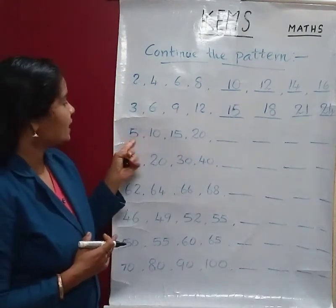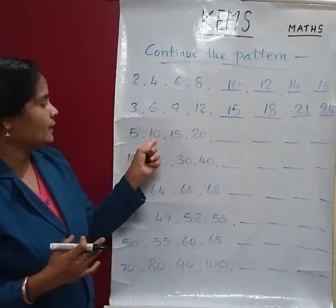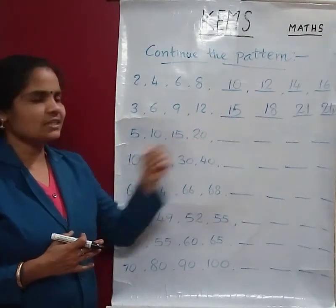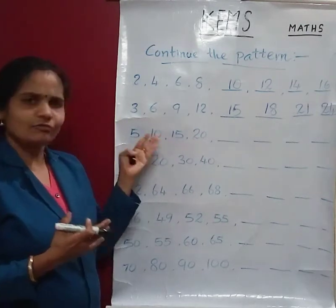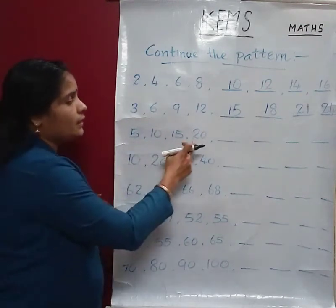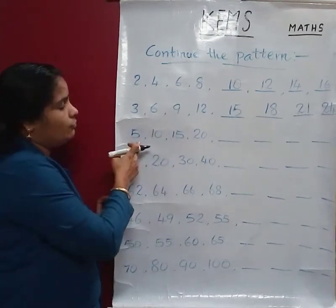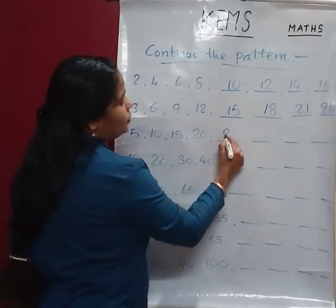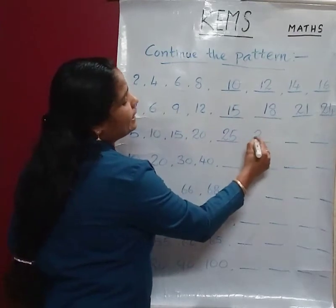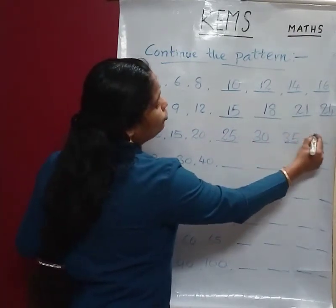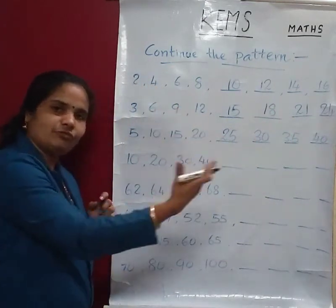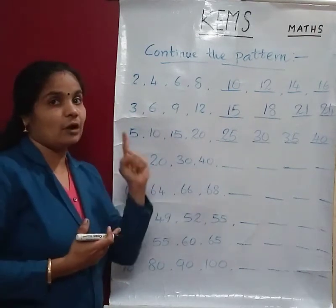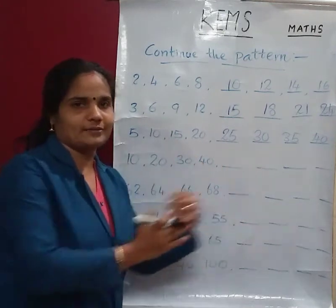Next: 5, 10, 15, 20 — can you guess the next number? Yes, these are 5s — counting by 5s. So the next numbers: 5, 10, 15, 20, 25, then 30, 35, 40, then 45, 50, 55, and go on. That is the 5s — counting by 5s. Keep counting by 5s.